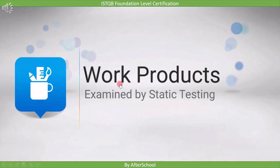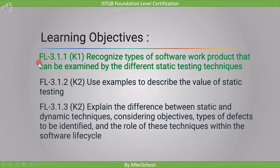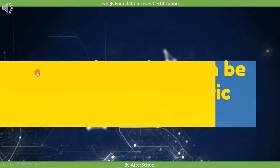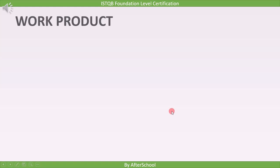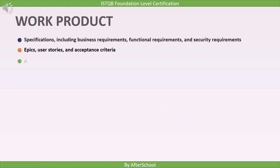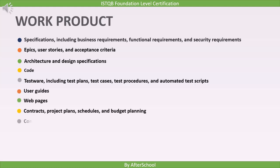In this lecture, we will list down all the work products which can be examined by static testing. This addresses the first learning objective: recognize types of software work products that can be examined by different static testing techniques. It is marked as K1, so you need to just remember the names of work products. Remember: any work product can be examined using static testing.